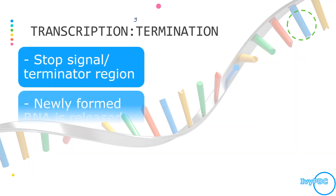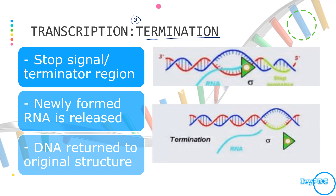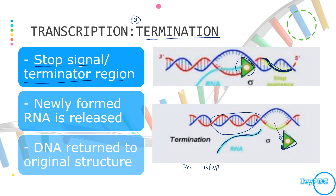The third and last stage is termination, where the transcription process ends. Stop signals, or terminator regions, are found in a part of the DNA sequence that codes for the termination of the process. When the RNA polymerase encounters this stop signal, it dissociates from the DNA, zips the DNA back to its original structure, and releases the newly formed RNA. In prokaryotes, this RNA is called mRNA, but in eukaryotes, due to a more complicated process, it is called pre-mRNA.